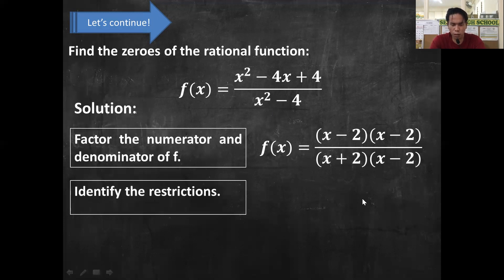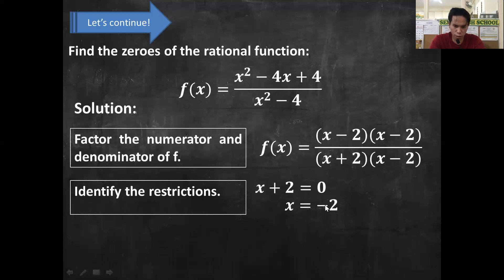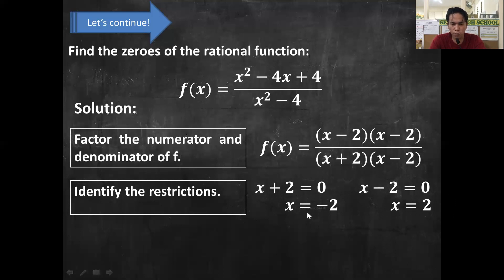Next, identify the restrictions: what value of x will make the denominator equal to 0? Equating each factor to 0: x + 2 = 0 gives x = −2, and x − 2 = 0 gives x = 2. So when x = −2: −2 + 2 = 0, and when x = 2: 2 − 2 = 0. These make the denominator 0, so they are the restrictions of our function.